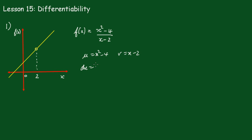So f'(x) is going to be v du, so multiplying those two together we're going to get 2x squared minus 4x, and then subtract this one, we're going to get minus x squared plus 4, all over x minus 2 all squared.